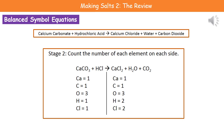To balance the equation, we need to count the number of each element on each side. The easiest way is to use the arrow as a dividing line, then write the symbols for each element on each side in the same order and count them up. On the left-hand side we've got one calcium, one carbon, three oxygens, one hydrogen and one chlorine. On the right-hand side we've got one calcium, one carbon, three oxygens, two hydrogens and two chlorine.